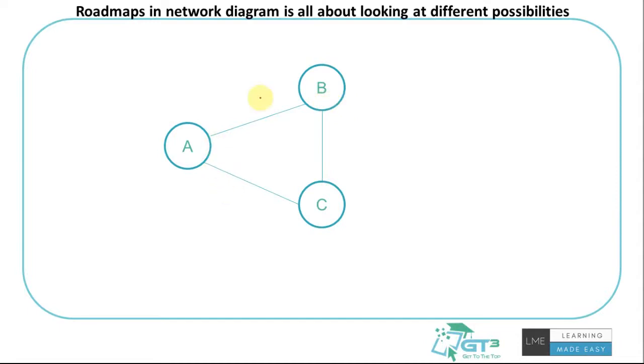Let's say this is how three towns or cities are connected: A, B, and C. If my goal is to go from A to C, what are the possible routes I can take? I can go from A to C directly, or I can go from A to B and B to C.